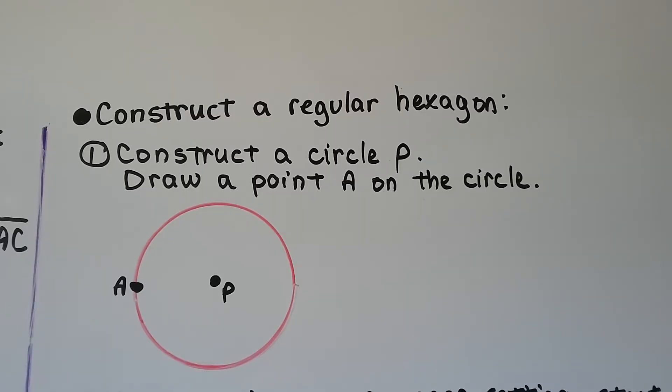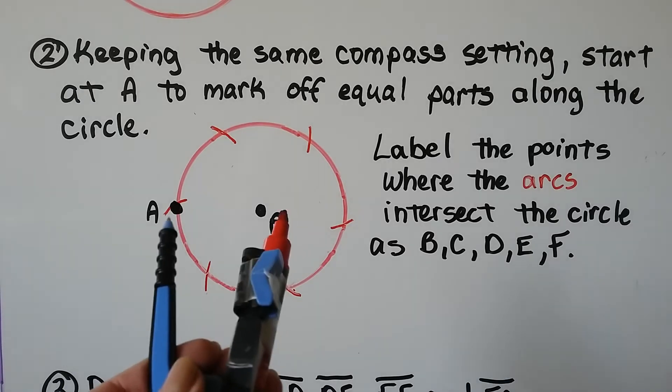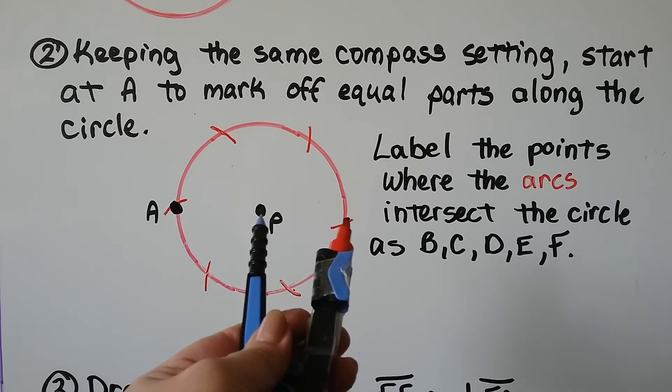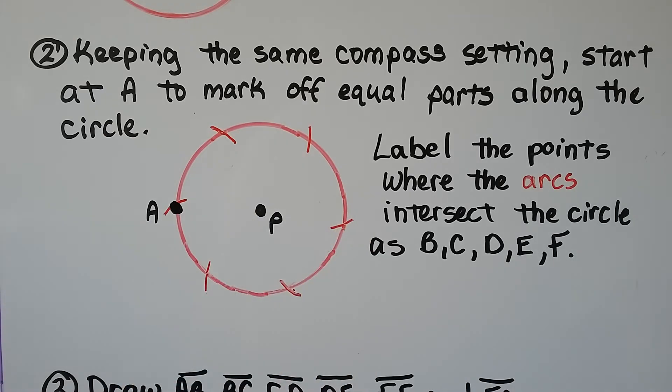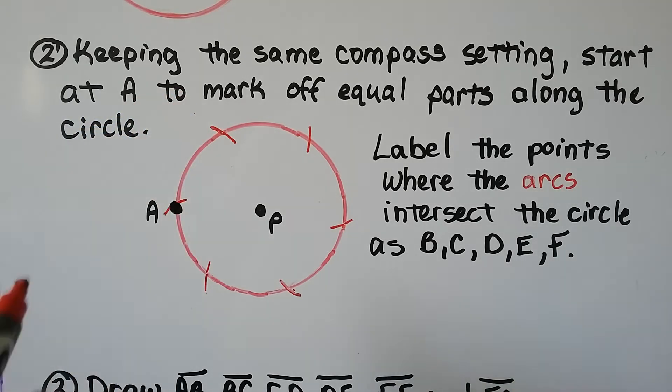We can construct a regular hexagon. We construct circle P just like we did before, and we draw point A on the circle. You can put it anywhere you want. We keep the same compass setting we used to make the circle, so we're going to have the same distance here.